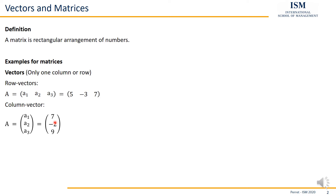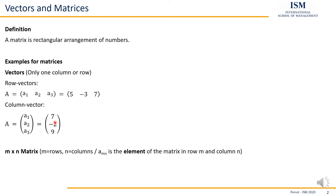So that was vectors, the first and easiest type of matrices. In general, we talk about an n×m matrix where the first value is the number of rows and the second value is the number of columns. Everything inside — all the numbers — we refer to as the elements. In particular, element a_mn is the element in row m and column n.